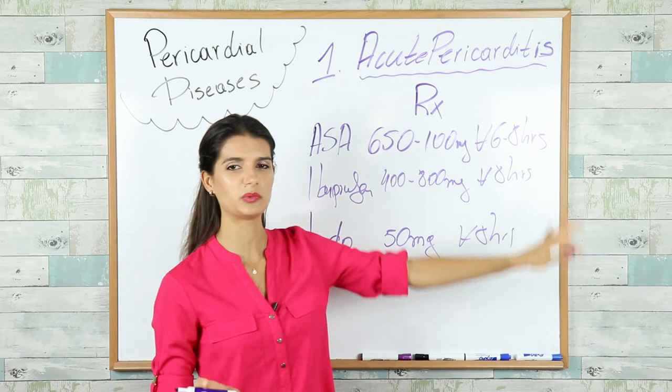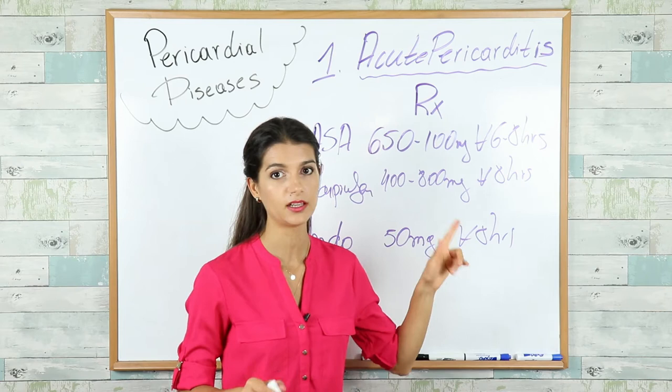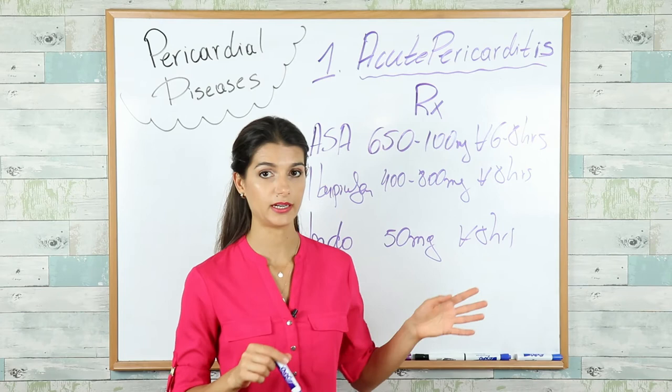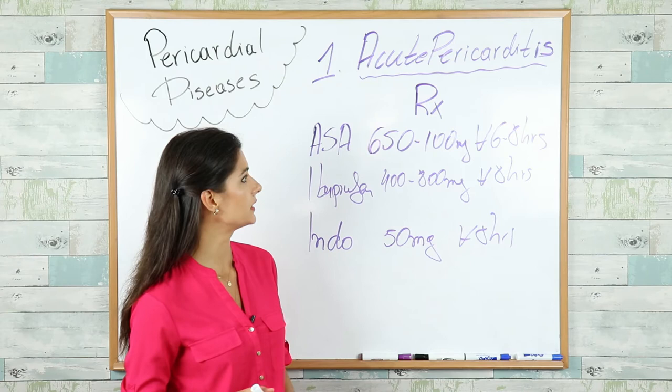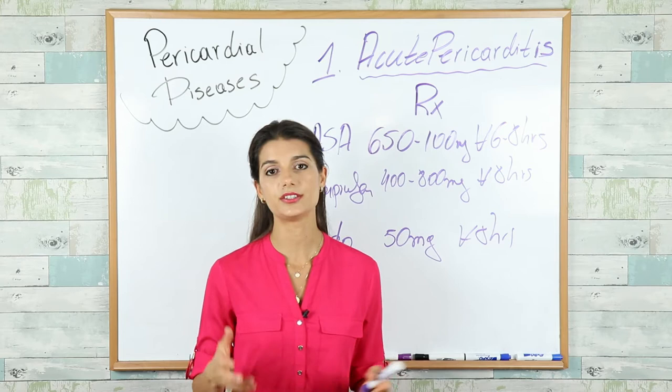Very importantly, you should taper NSAIDs over 2–4 weeks to prevent recurrences of the pericarditis. You can also add colchicine to the treatment plan — use it for up to 3 months to prevent recurrences. Remember the side effects of colchicine: GI distress, and less commonly myositis, hepatotoxicity, and bone marrow suppression.